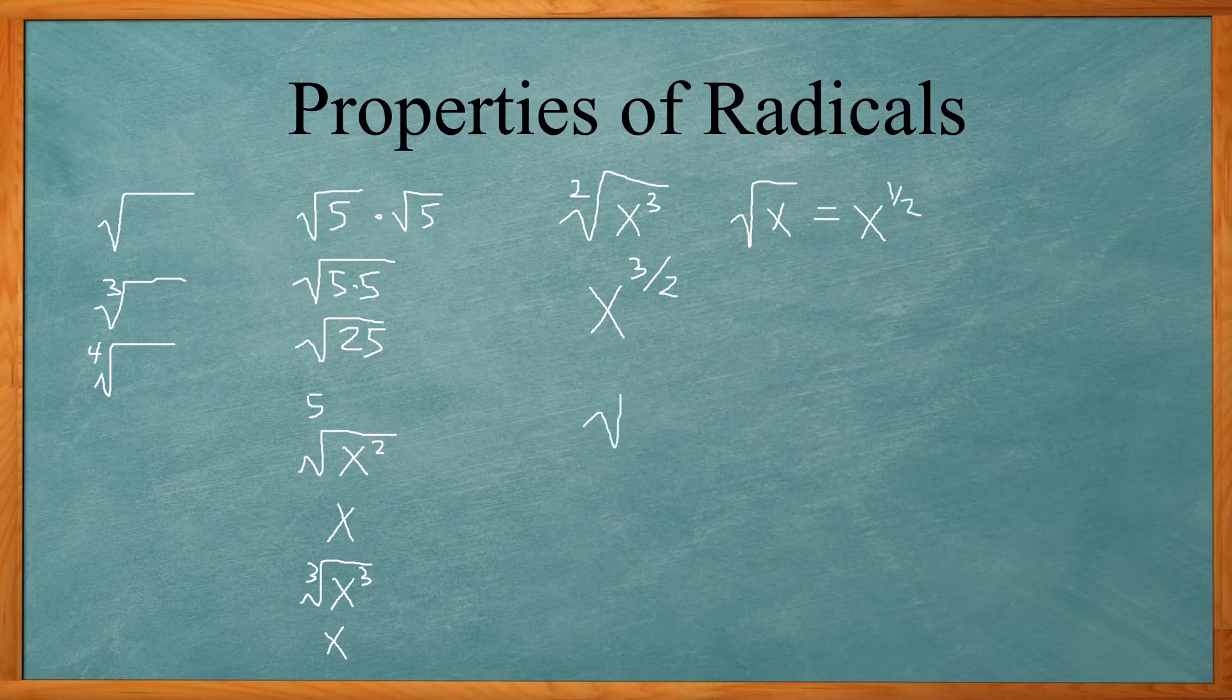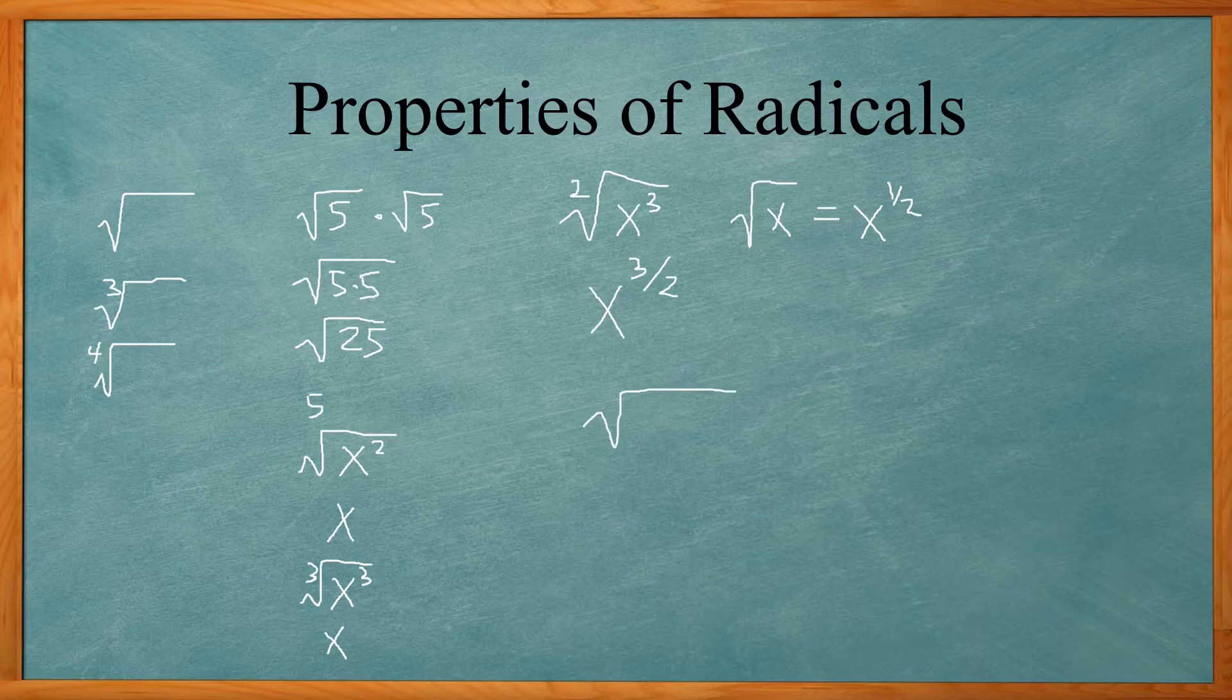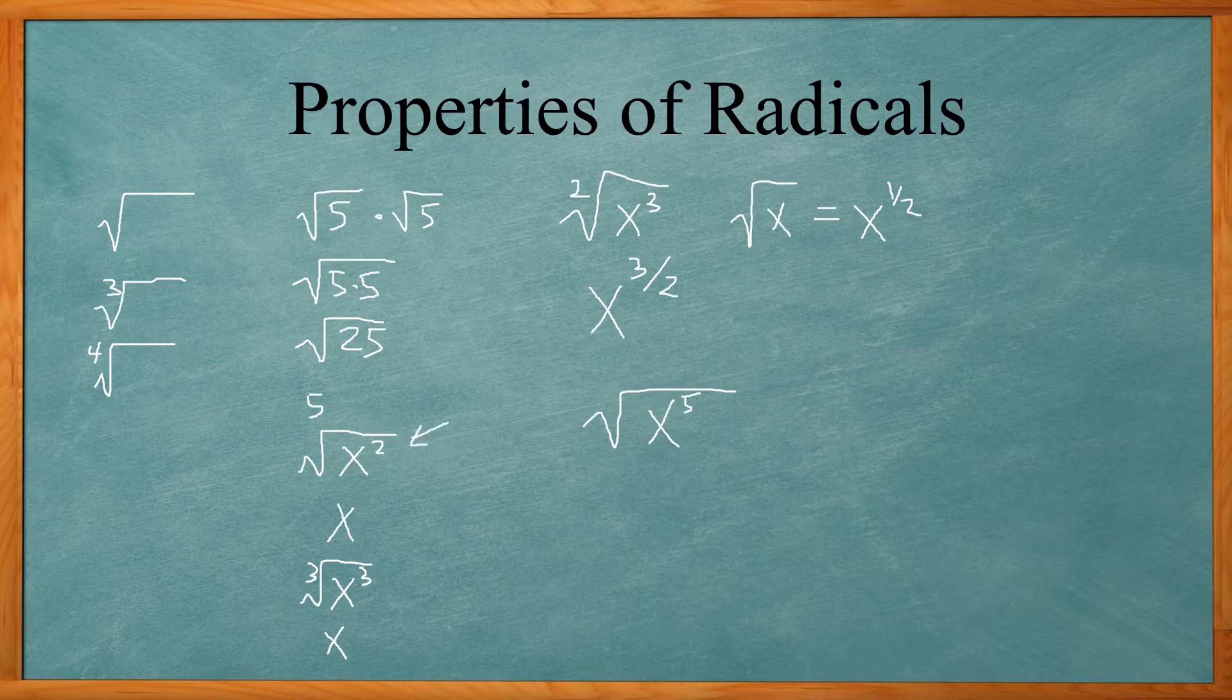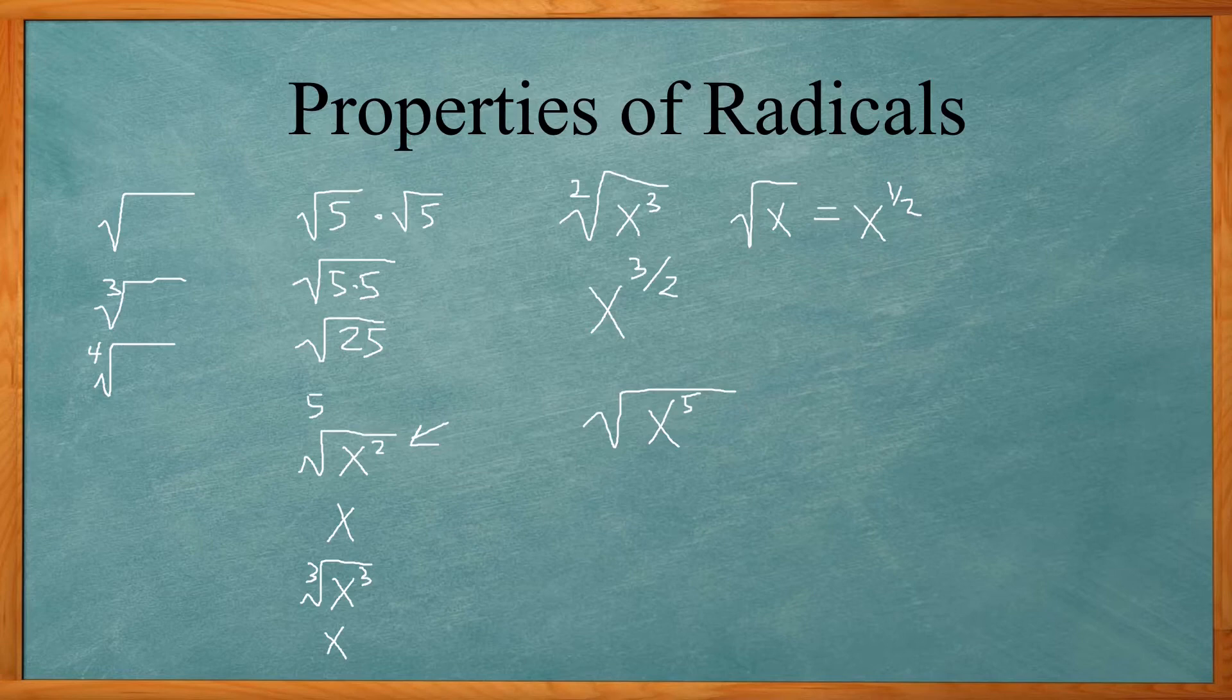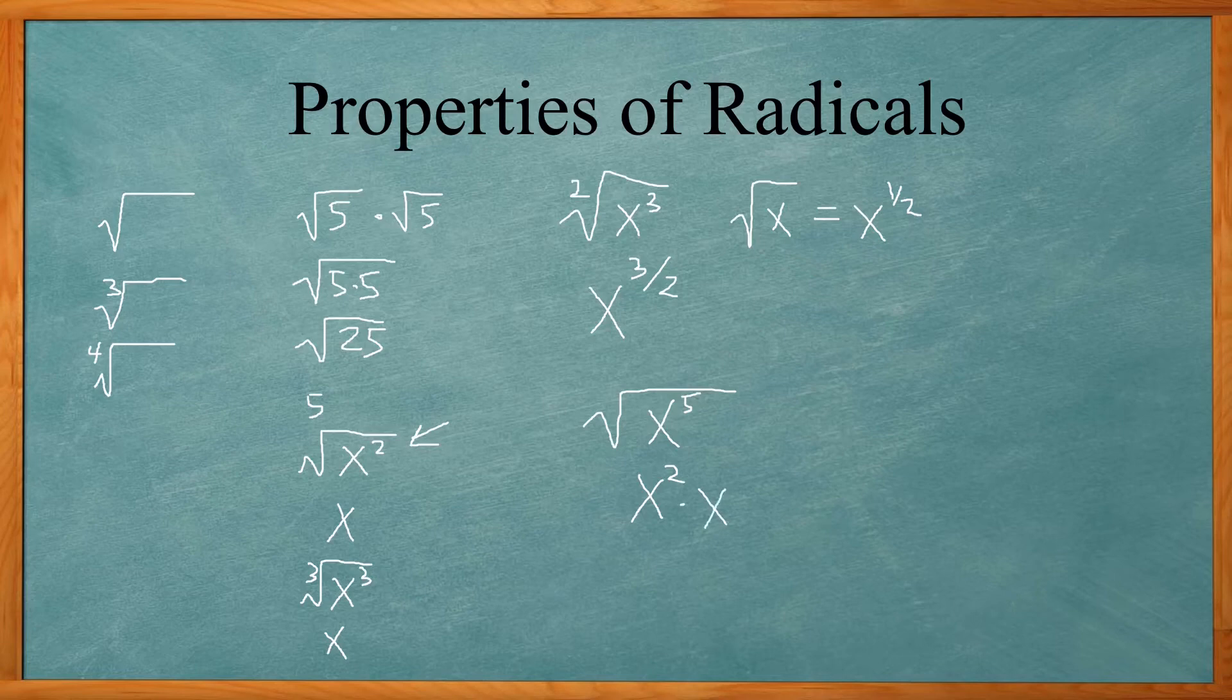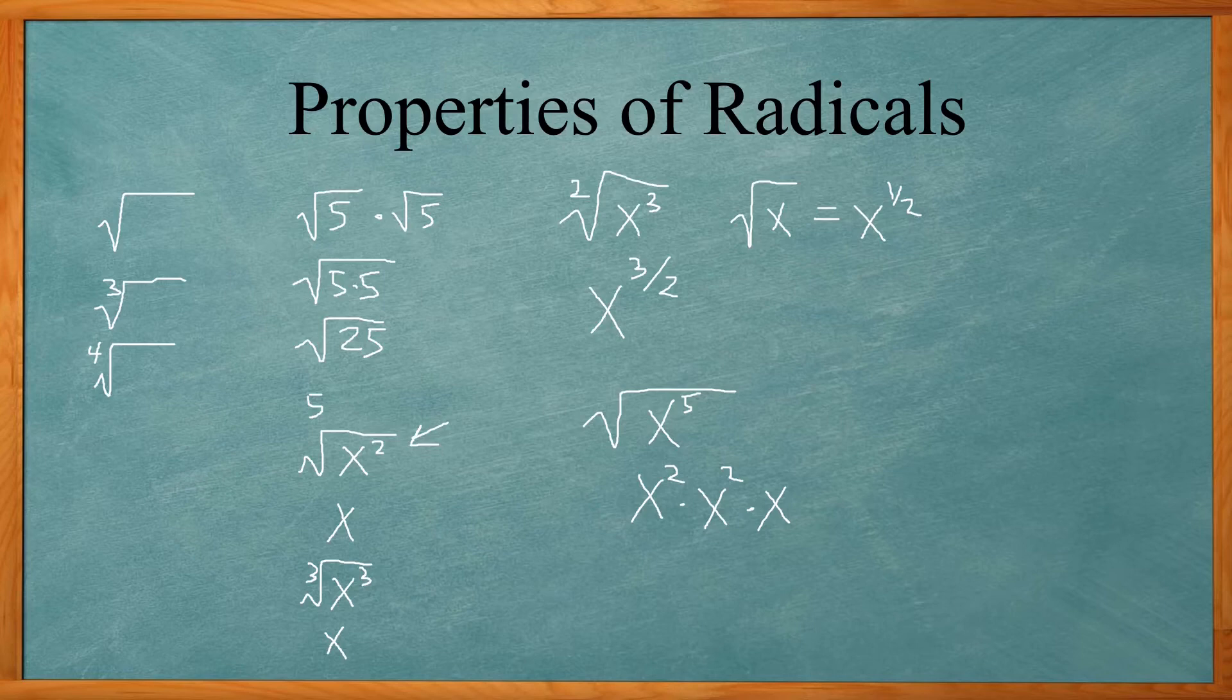If I look at this a little bit more carefully, so square root of x to the fifth power, we said x squared, square root of x squared is x. So for every x squared, that comes outside the radical as just a single x. So x to the fifth, we really have x squared times x squared times x. We have 2, 2, and 1. It adds up to 5.